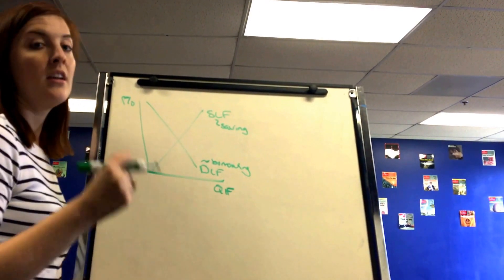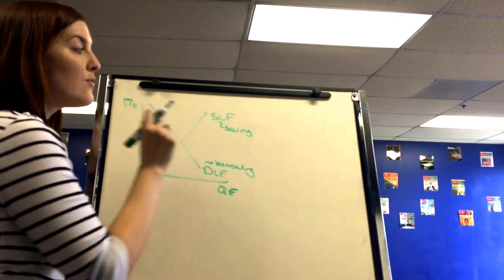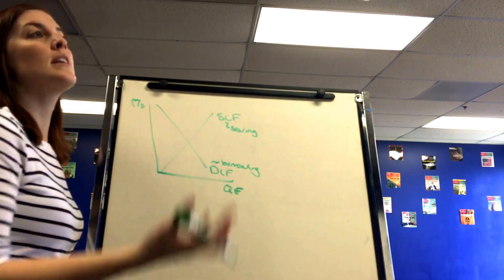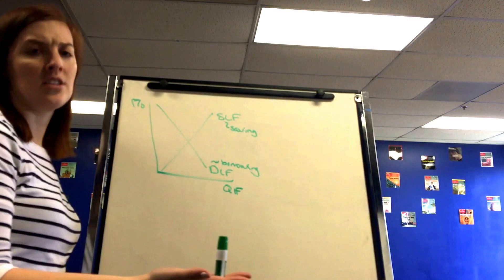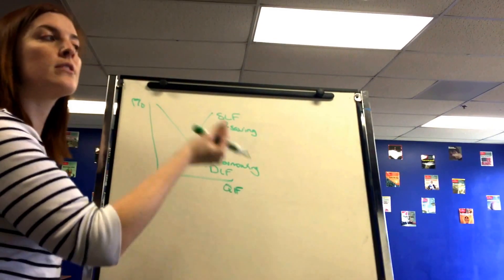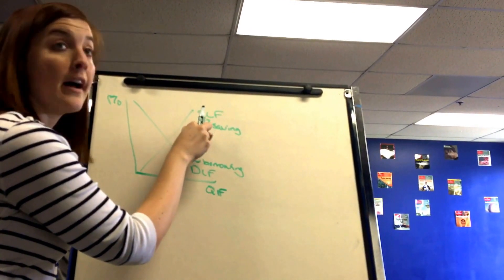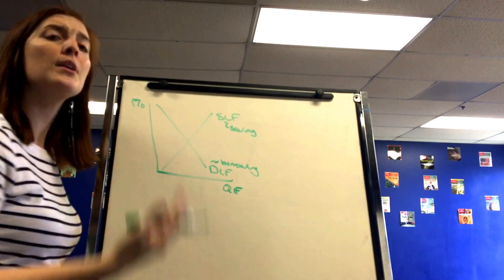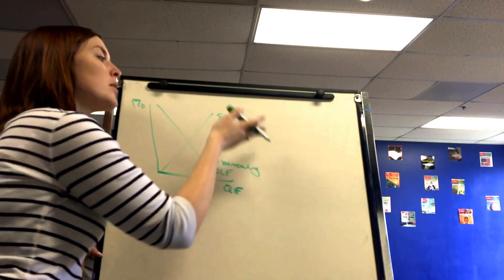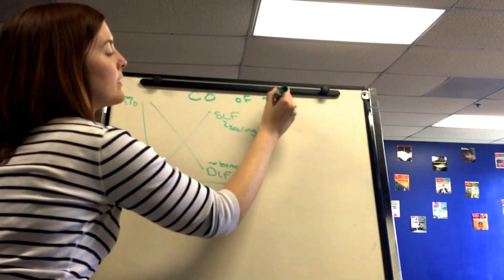Savings can refer to government, consumer, producer, or the foreign sector. On the AP exam, if more countries are investing in the United States, you'd show this as an increase in the supply of loanable funds, since America has more money to save. Foreign investment always moves the supply of loanable funds. We'll focus specifically on government borrowing and saving to illustrate the crowding out of gross private investment.